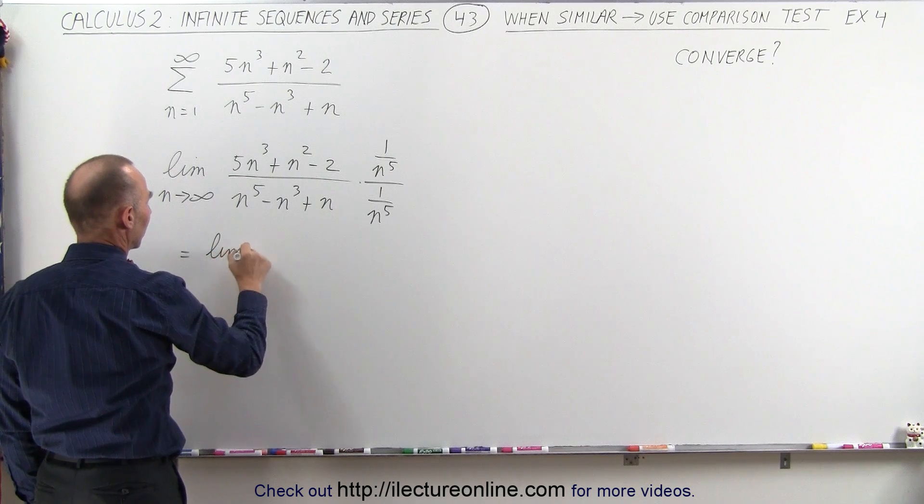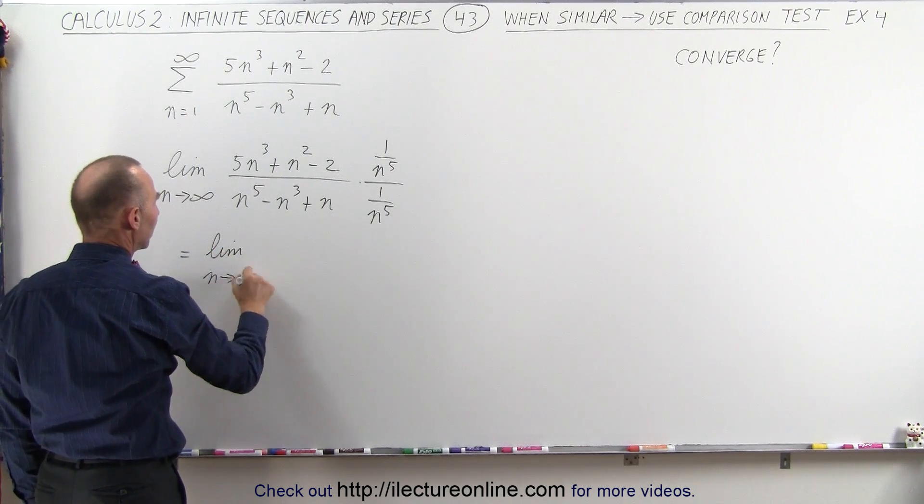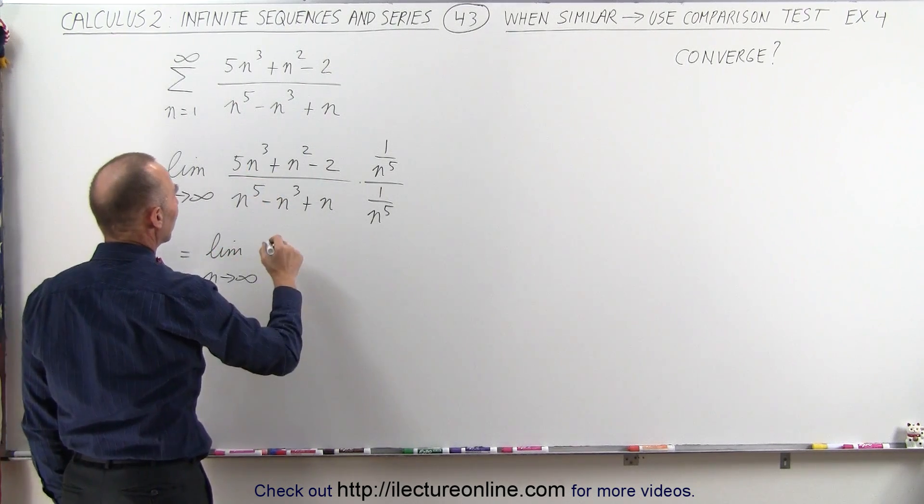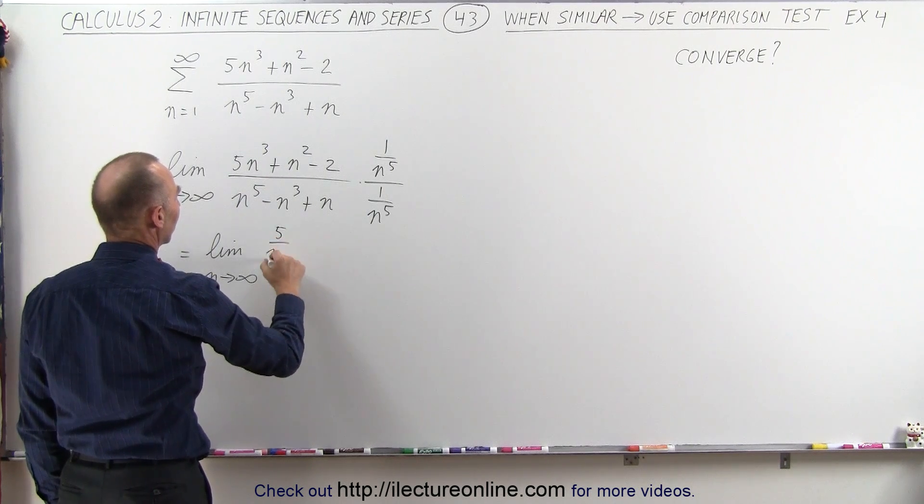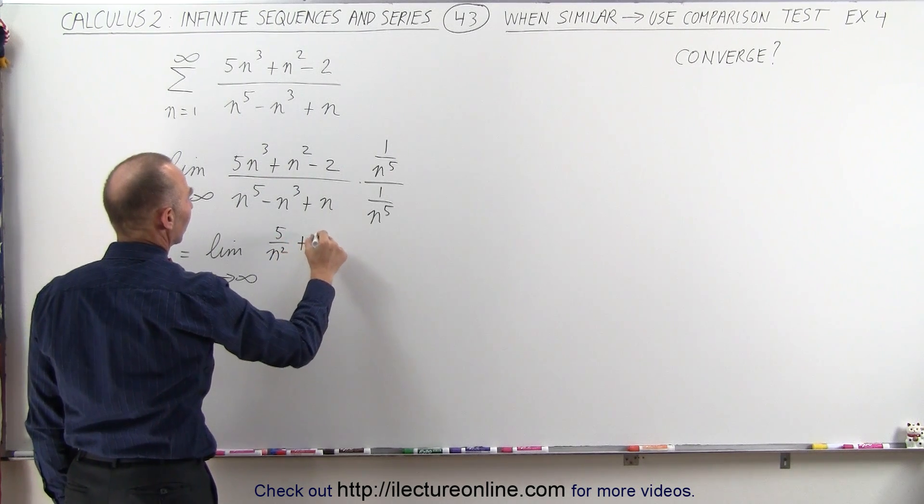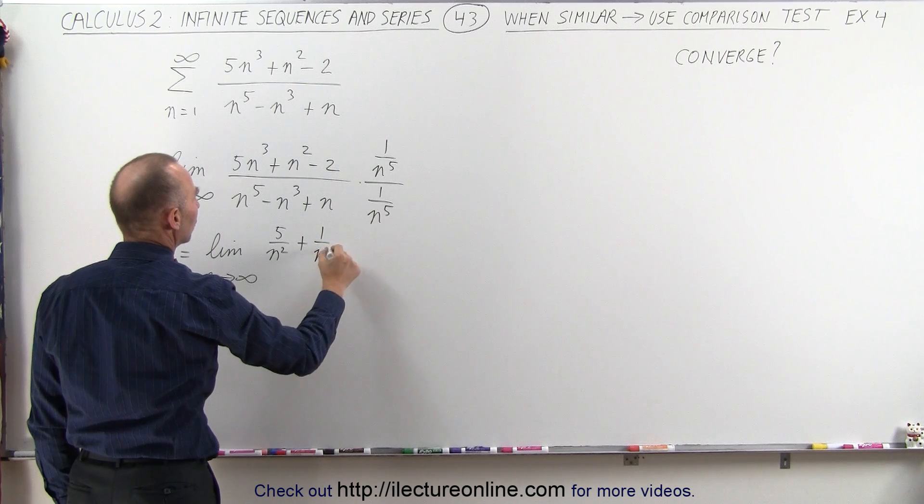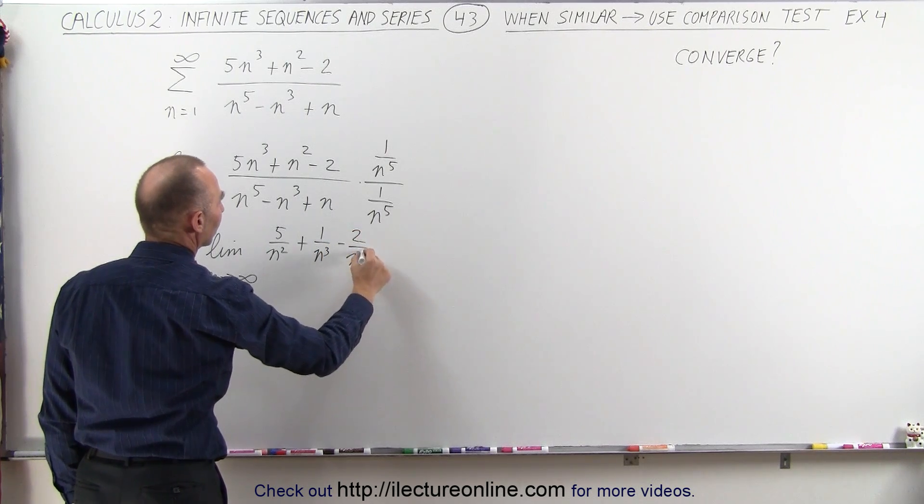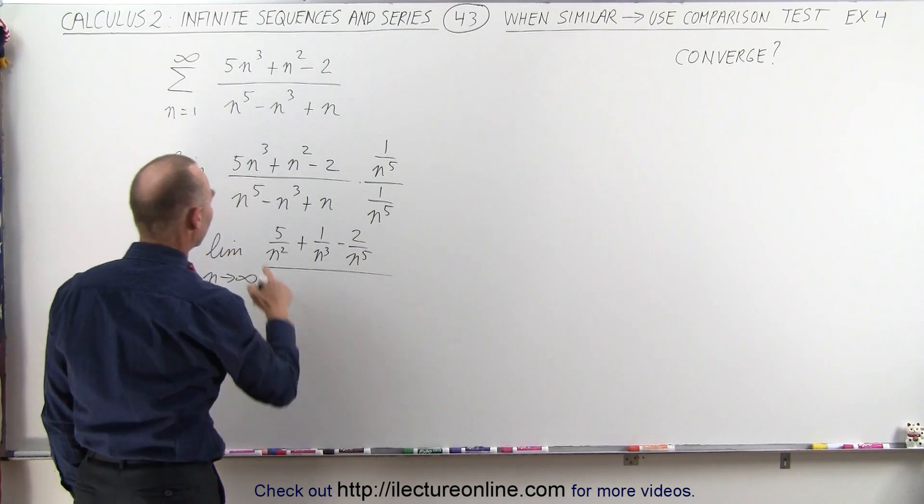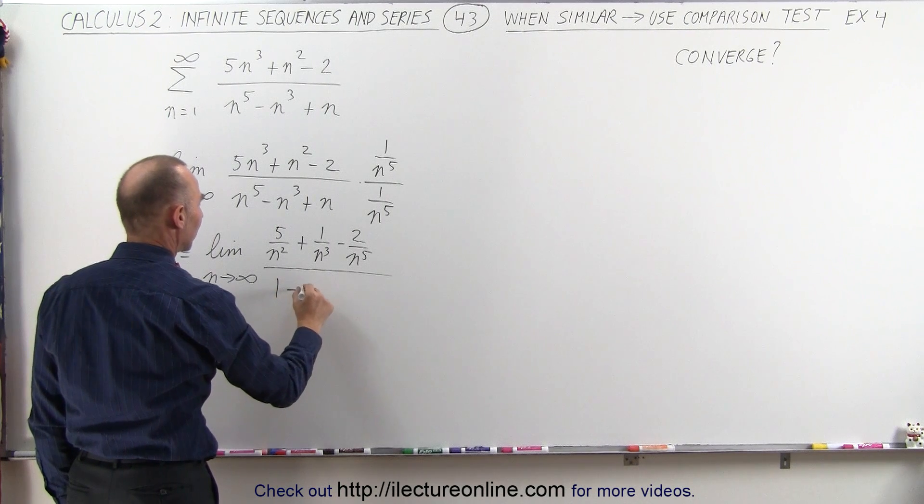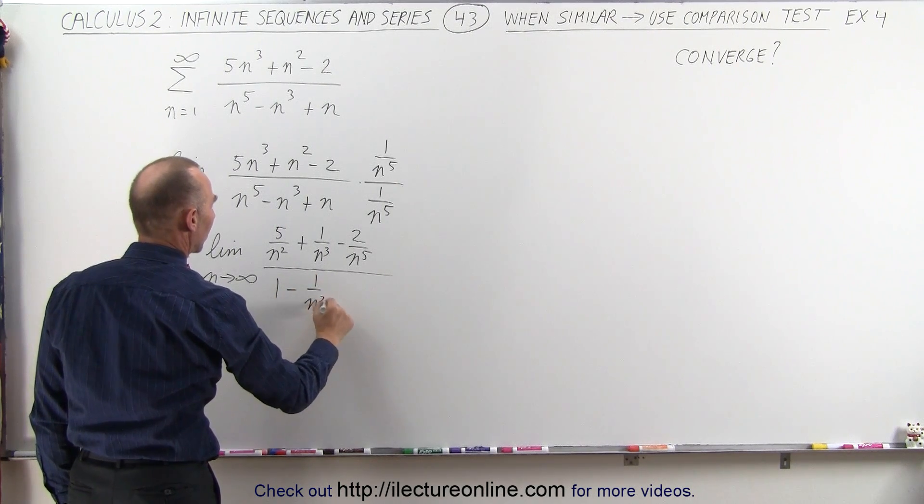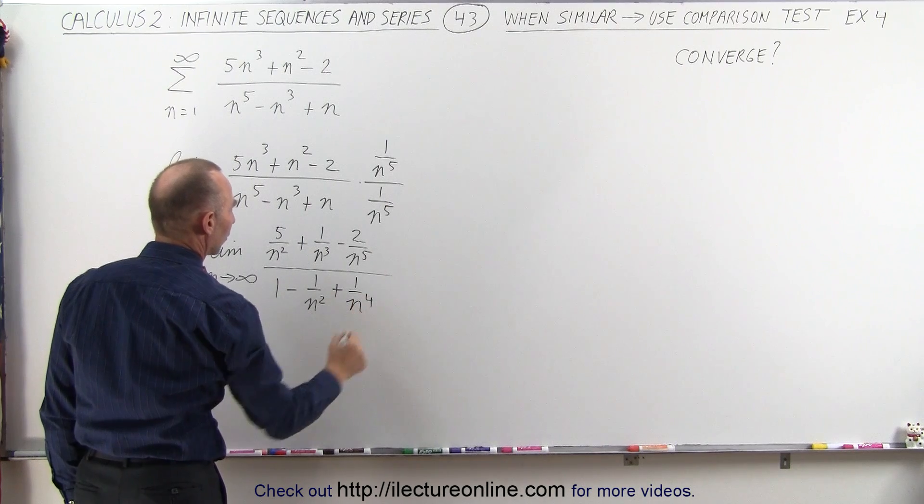this becomes equal to the limit as n goes to infinity of, in the numerator we get 5 over n squared plus 1 over n cubed minus 2 divided by n to the fifth, divided by, here we get 1 minus 1 over n squared plus 1 over n to the fourth.